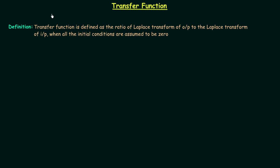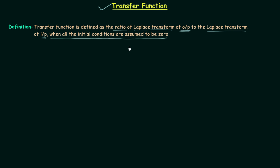In the last lecture we saw the definition of LTI systems and now in this presentation we will understand what is transfer function. The transfer function is an important parameter and we will first see its definition. The transfer function is defined as the ratio of Laplace transform of output to the Laplace transform of input when all the initial conditions are assumed to be zero. This last point is very very important — without it you cannot define the transfer function.